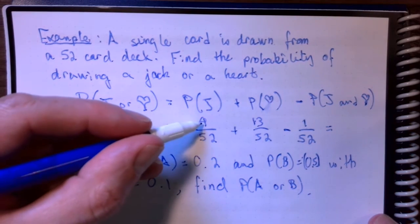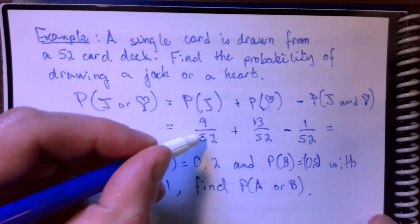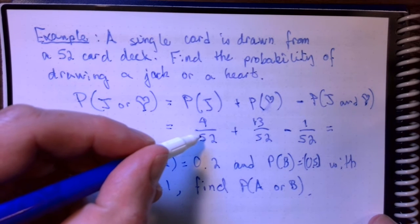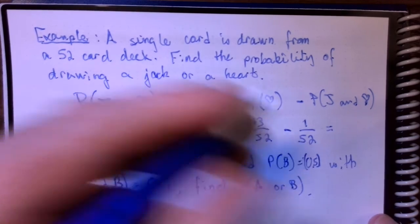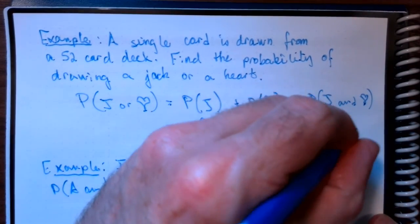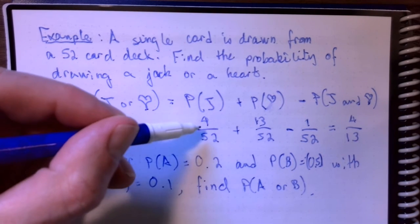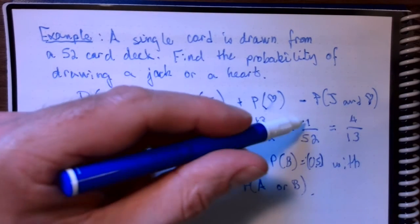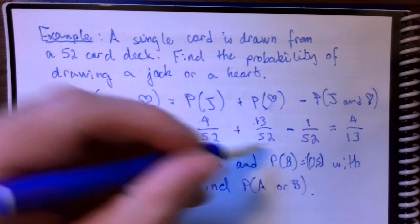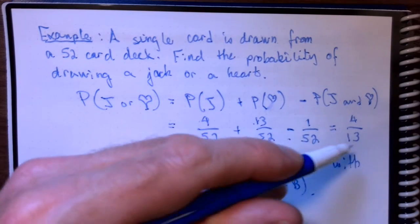So, let's total this all out. We get 16 out of 52, and that does reduce to 4 out of 13. You would need to add everything up. 4 plus 13 is 17, minus the 1 gives me 16. 16 out of 52. Those are both divisible by 4, so it reduces to this right here.